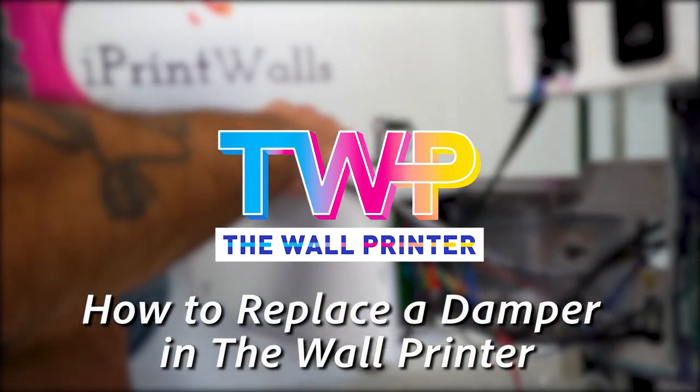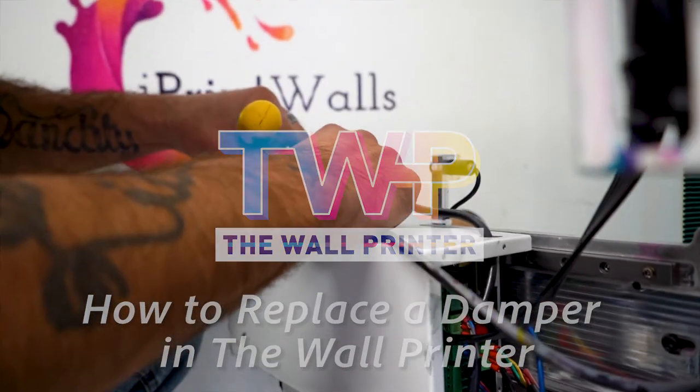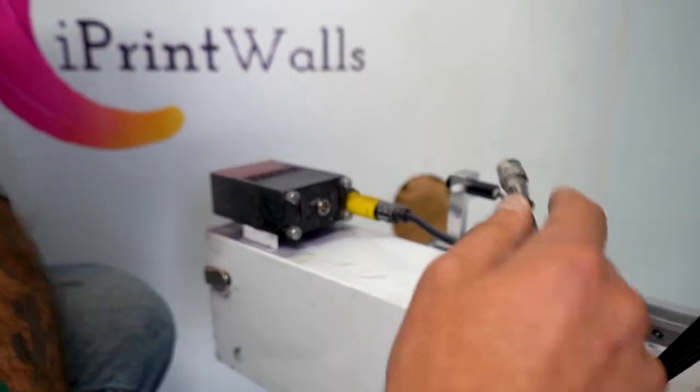This video will show you how to replace a damper in your wall printer. First, unplug the UV cable.